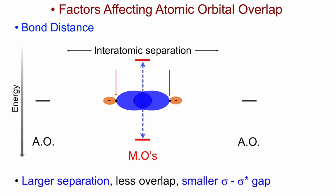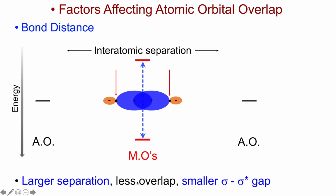Now we bring the two atoms in even closer, so the bond distance is shorter. What comes with that is a greater degree of overlap — strong bonding and a large energetic stabilization of the bonding MO, and conversely a much larger destabilization of the anti-bonding MO. We can see that the energy splitting between the bonding and anti-bonding MOs is intimately related to bond distance: the larger the separation, the less overlap, and the smaller the sigma–sigma* gap.